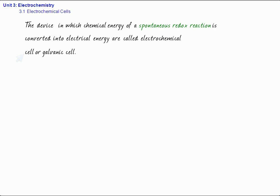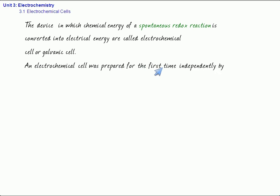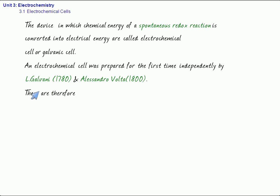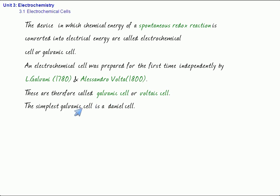An electrochemical cell was prepared for the first time independently by L. Galvani in 1780 and Alessandro Volta in 1800. These are therefore called galvanic cells or Voltaic cells. The simplest galvanic cell is a Daniel cell. We are now going to discuss the working of the electrochemical cell using the same reaction taken for the direct redox reaction to construct the electrochemical cell.